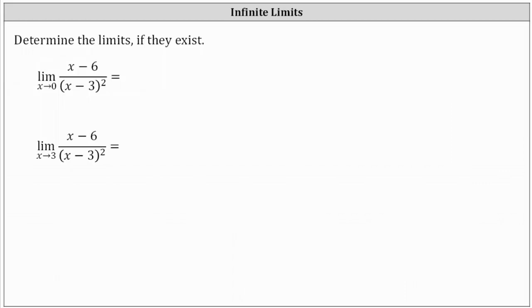We're asked to determine the limits if they exist. Notice both limits involve the same rational function. First, we have the limit of the quantity x minus six divided by the square of x minus three, as x approaches zero.